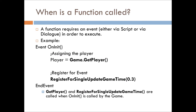So when is a Function called? It requires an event or some method to execute it because it won't run by itself. So you either do it within your script, have an event designated like onInit, or you can use dialogue fragments if you call the script within your quest and give it the Function. The example I give here is just an onInit event where we're getting the player and registering for the update — that will look familiar because we had that in the last episode.